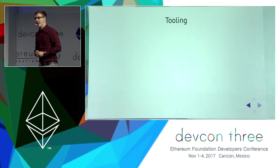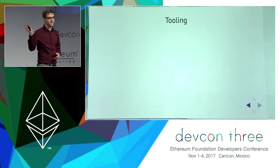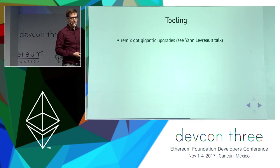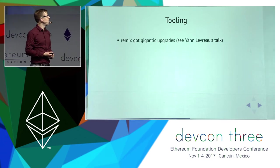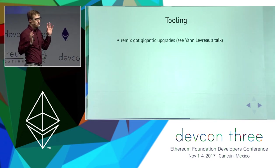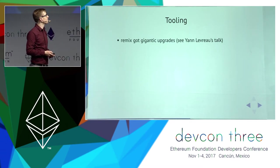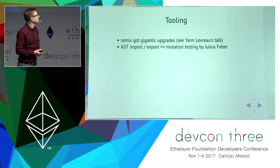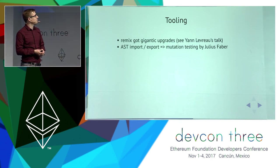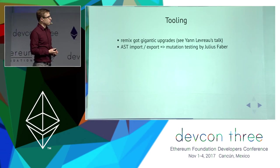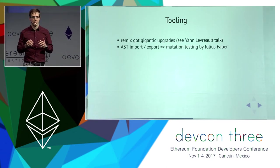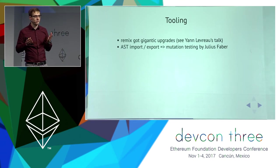A language becomes more and more useful the better tools are available for it. Remix got gigantic updates — we can now track variables, have breakpoints, see references of variables, and soon will be able to rename variables. We have a way to export the AST, which is the result of the parsing step. This enables many new features, including a tool for code coverage not based on syntax or just lines, but on semantics — for example, is a less-than operator actually tested to do what it does.